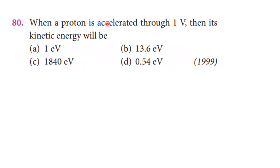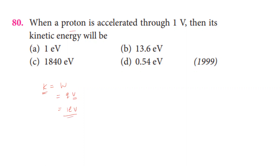When a proton is accelerated through 1 volt, what will its kinetic energy be? The work done equals the change in kinetic energy. Since the initial kinetic energy is zero, the final kinetic energy equals the work done, which equals charge times potential difference. The charge of the proton is e and the potential difference is 1 volt, so the kinetic energy is 1 electron volt.